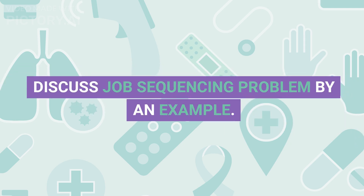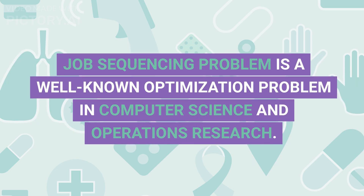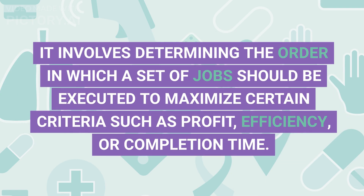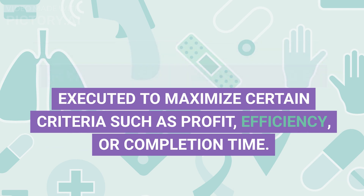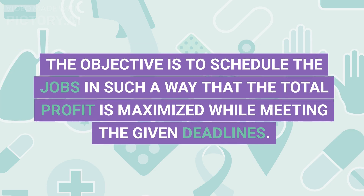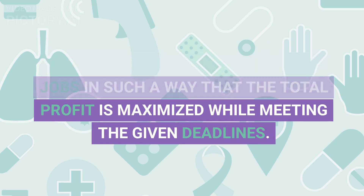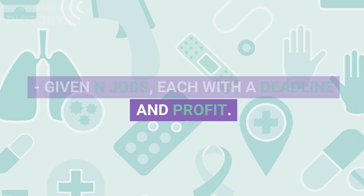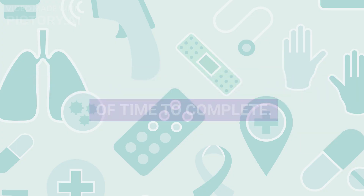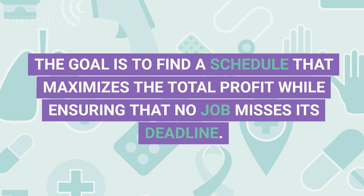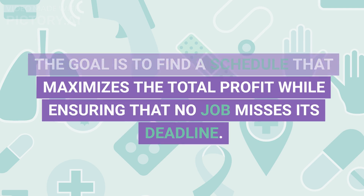Q3. Discuss job sequencing problem by an example. The job sequencing problem is a well-known optimization problem in computer science and operations research. It involves determining the order in which a set of jobs should be executed to maximize certain criteria such as profit, efficiency, or completion time. We are given a set of jobs, each with a specific deadline and profit or cost associated with it. The objective is to schedule the jobs to maximize total profit while meeting deadlines. Each job must be scheduled before or on its deadline, only one job can be executed at a time, and the goal is to find a schedule that maximizes total profit without any job missing its deadline.